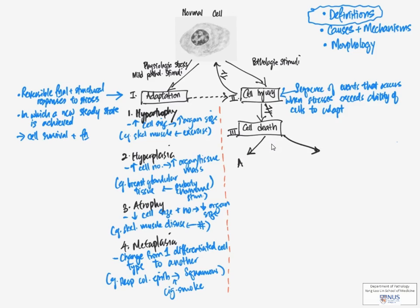Now let's move on to cell death. There are two main types of cell death. One is called apoptosis and the other is necrosis.